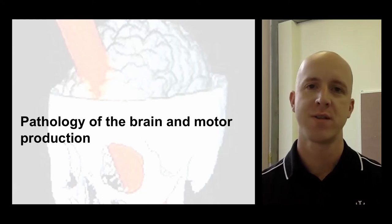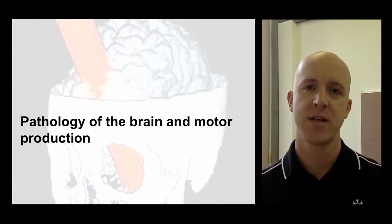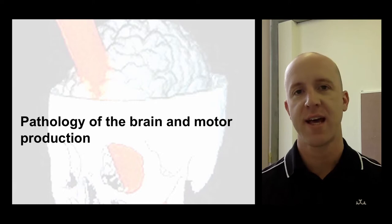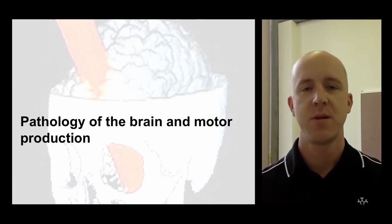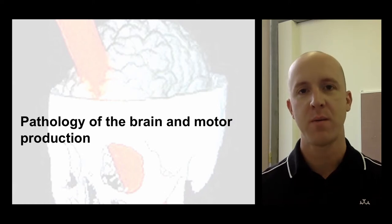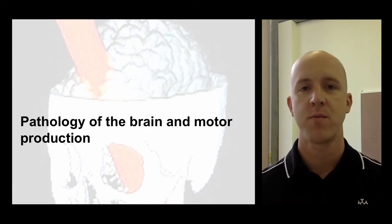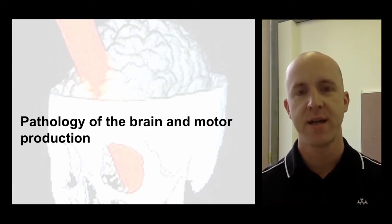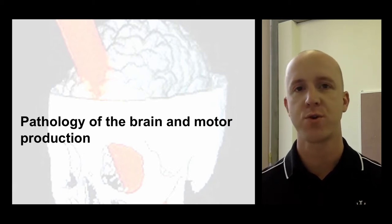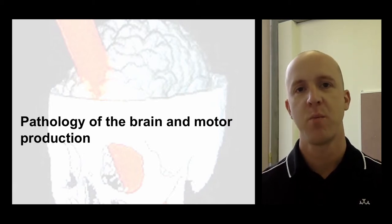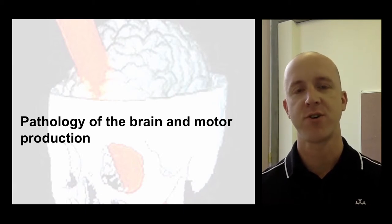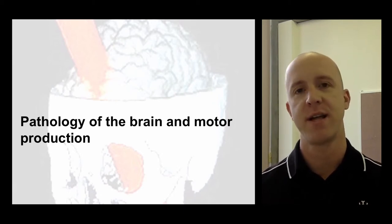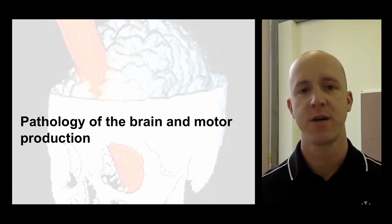This is a lecture for the Motor Control Skill Acquisition Unit, looking at pathology in relation to motor control. In particular, what we've learned about the way we produce movements from damage that's occurred to the brain through trauma, strokes, or particular diseases. It can tell us about how the brain works, because once a function is removed, it begins to tell us what was happening before the injury occurred.